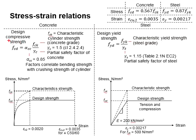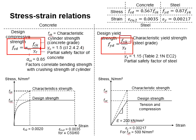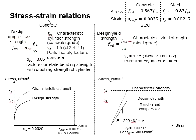The design strength of the concrete and steel is a function of the characteristic strength of each material divided by their respective partial factors of safety. The partial factor of safety for concrete is equal to 1.5, while the partial factor of safety for steel is equal to 1.15.